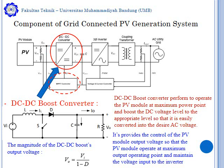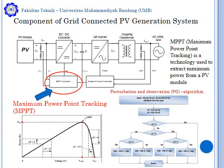The DC-DC boost converter provides control for the PV module output so that it operates at the maximum output operating point and maintains the voltage input. The maximum power point tracking is a technology used to extract maximum power from the PV modules. The method algorithm used in this system is the perturbation and observation method.